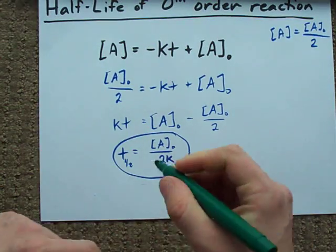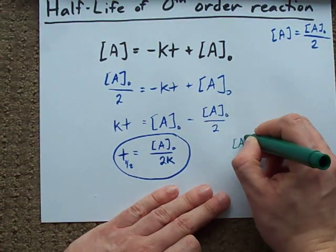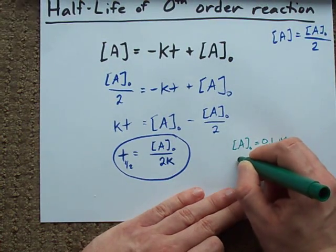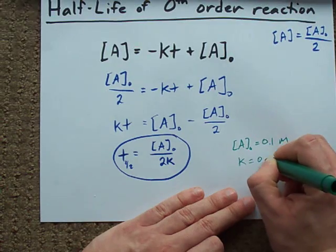If you were given an initial concentration of substance, like 0.1 moles per liter, and you were given a K, let's make it 0.1 as well.